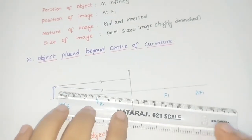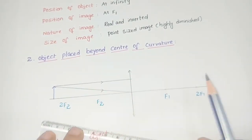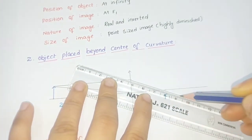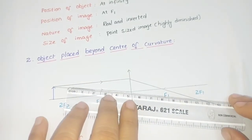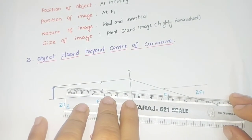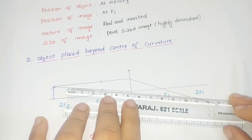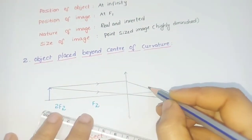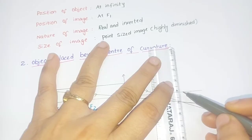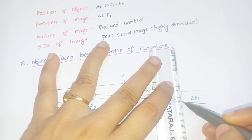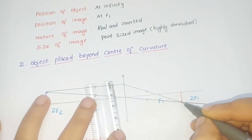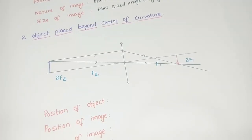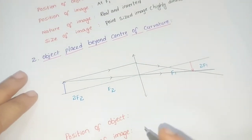We know that the light ray passing parallel to the principal axis will meet at the focus. The light ray passing through the optic center is undeviated, so it comes straight through. At the intersecting point, an image is formed.